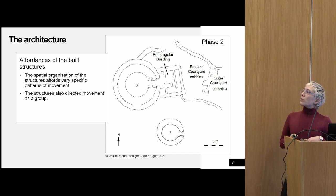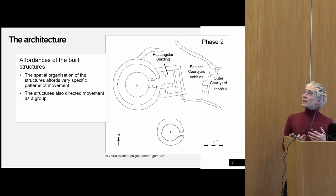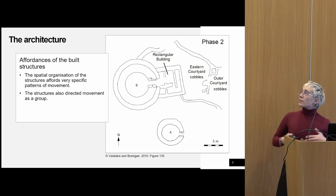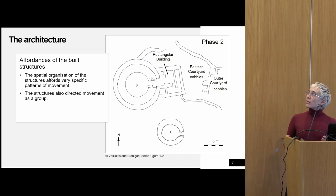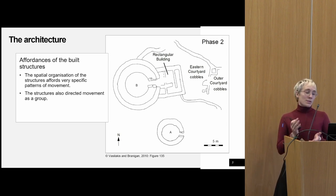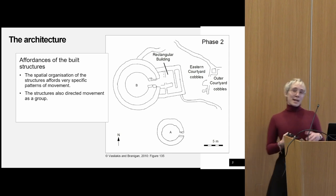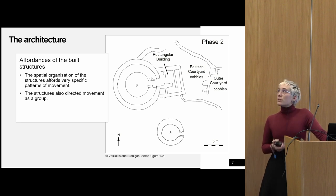The structures themselves would have directed movement as a group in the sense that their entrances are both quite narrow, as are the rooms of the rectangular building from which one would have to pass prior to gaining entrance to Tholos B. This means that one person would be able to enter at a time, necessitating the negotiation and formation of a succession — they'd have to decide who would enter first and who would enter last. The limited spatial capacities of the tombs, but especially the rectangular building, means that only a certain number of participants could be inside at once, and those not present would have had limited to no perception of what was taking place, given the aforementioned visual limitations.